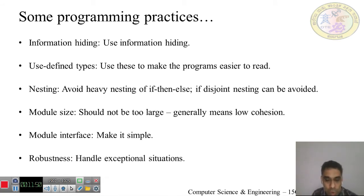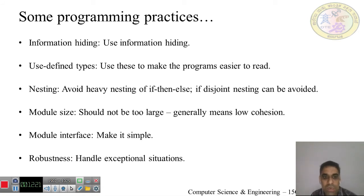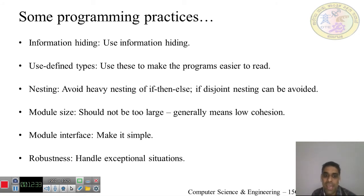The next guideline is robustness. A program is robust if it does something planned even for exceptional conditions — for example, when an error occurs, the program should terminate smoothly. If it behaves according to our plan under such conditions, we can say our program has a robust feature. Robustness is required in order to handle exceptional situations.